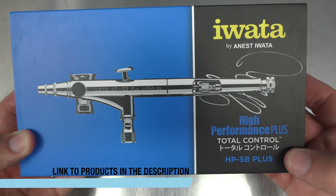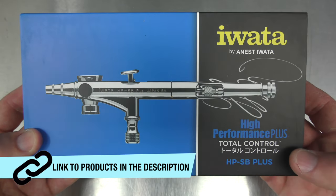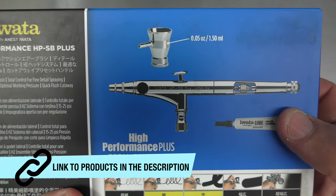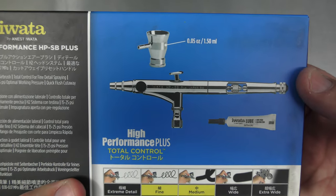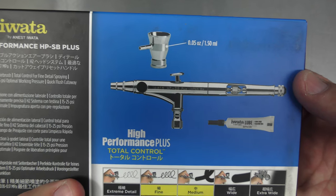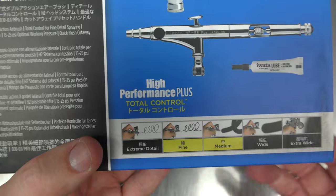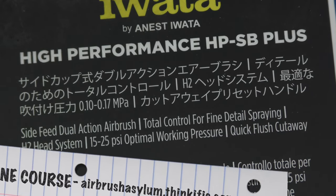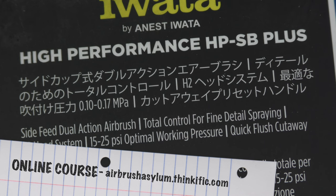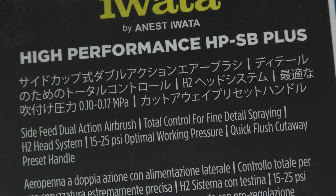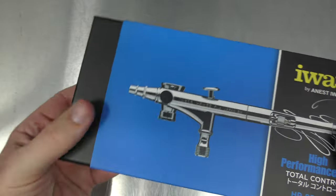So this is the Awaita HPSBP Plus from the High Performance Plus series and this is a side feed airbrush. It has a 0.05 ounce or 1.50 color cup and it sits within the fine and medium range. This is a side feed dual action airbrush, total control for fine detail spraying. H2 head system, 15 to 25 psi optimal working pressure, quick flush cutaway preset handle. Let's go ahead and take it out of the sleeve.